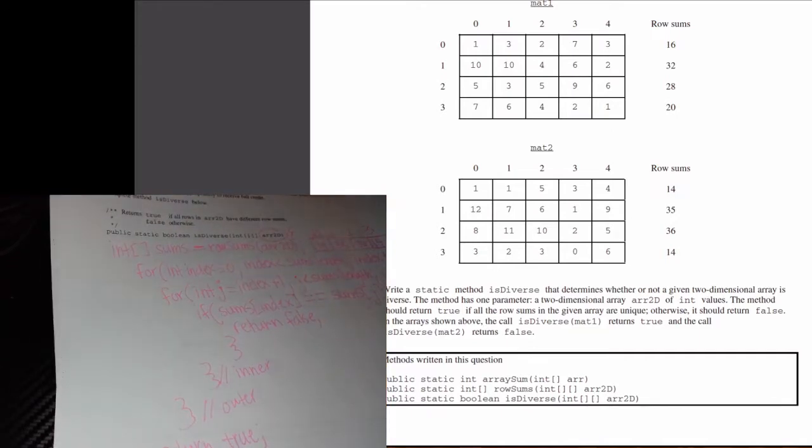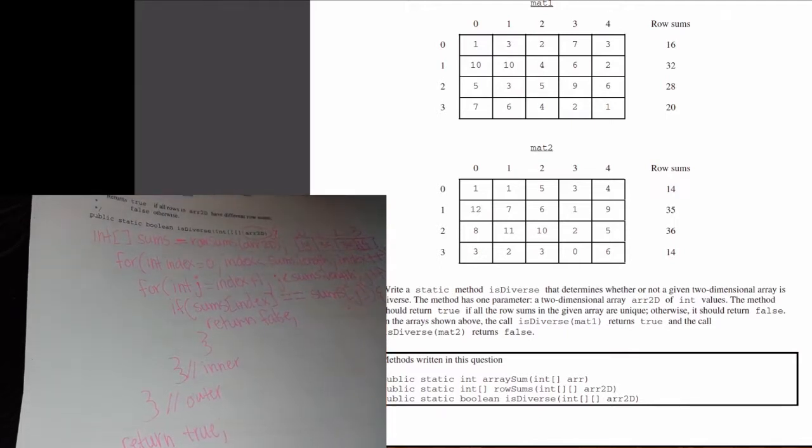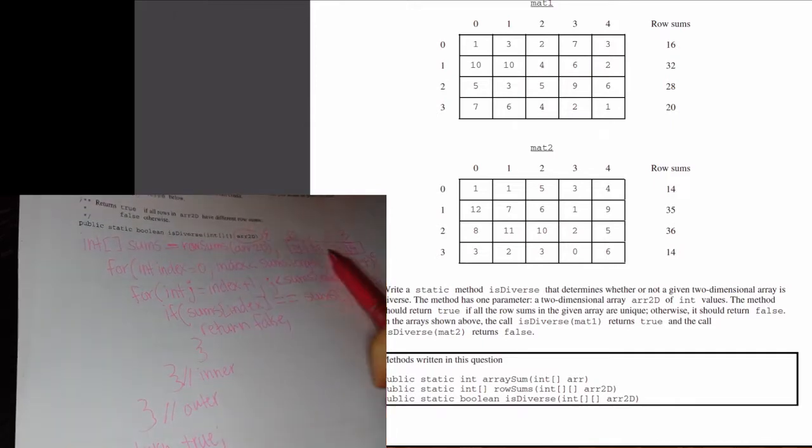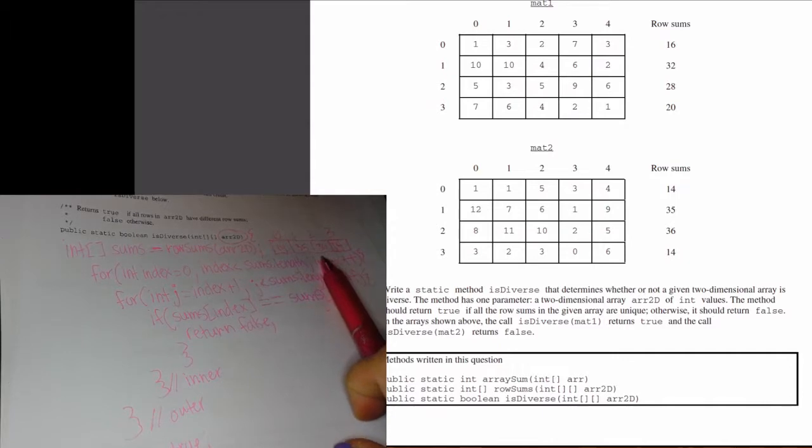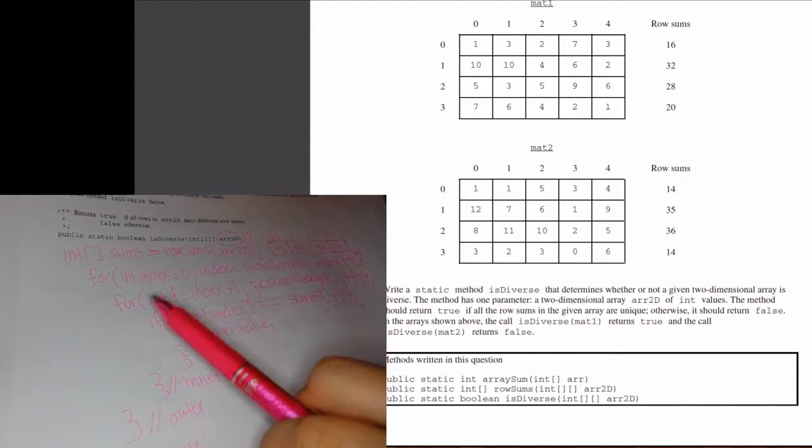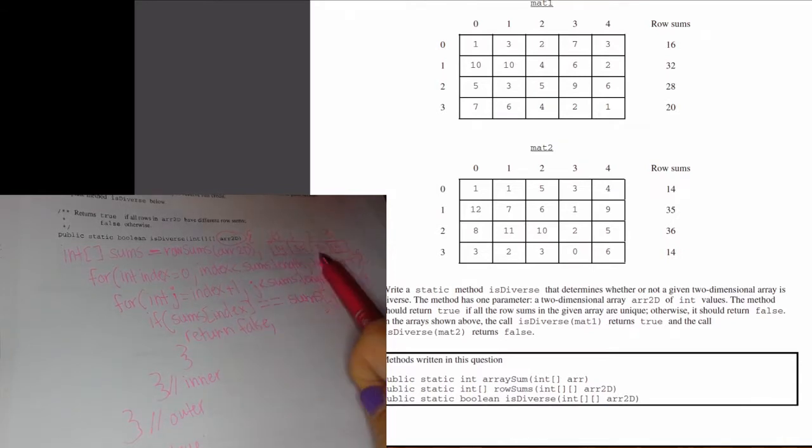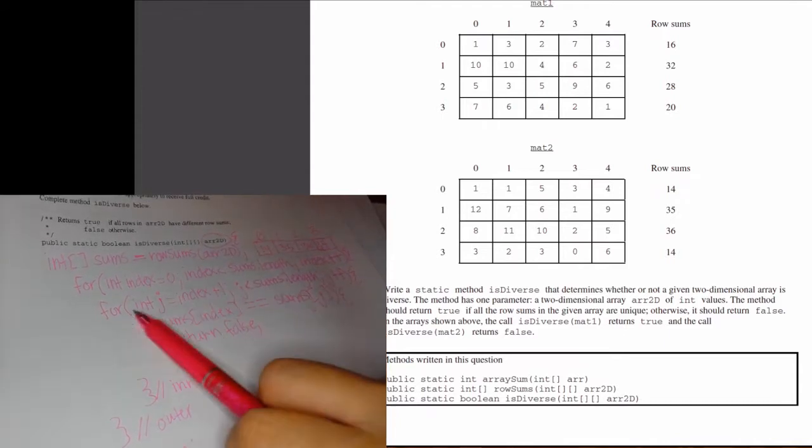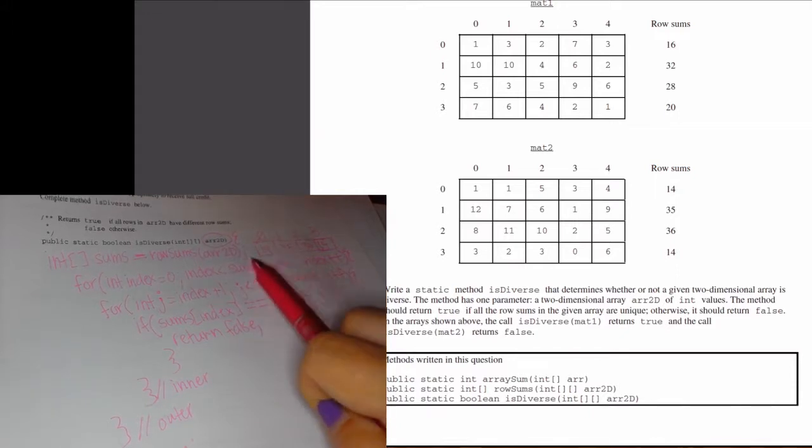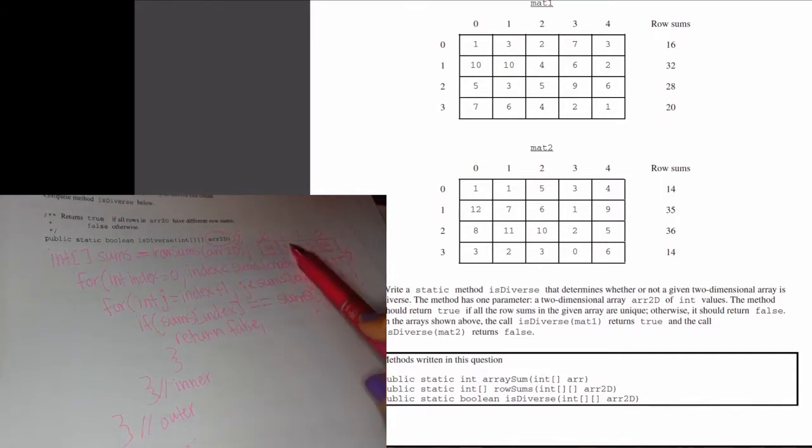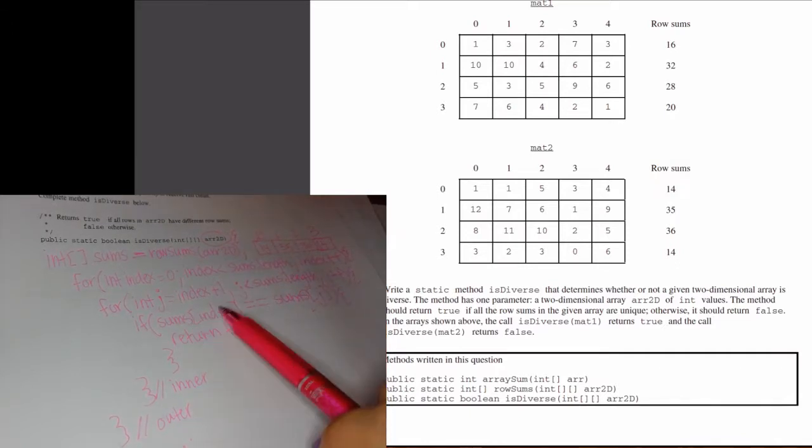So let's go over this code and explain what it's doing in the context of MAT2. For MAT2, we feed in MAT2 and we wind up with sums being this 1D array right here. Next, we want to iterate through sums. So we want to start at element 0, that's 14. What we want to do then is compare it to each of the other elements. So we're going to compare 14 to 35, basically. So we're going to compare is 14, sums sub 0, the same as sums sub 1, 35?